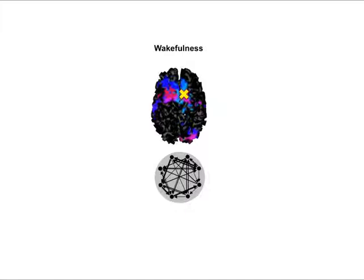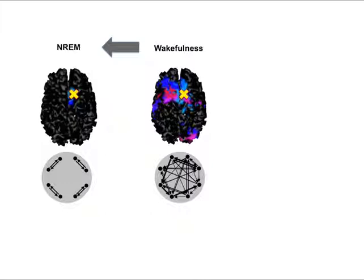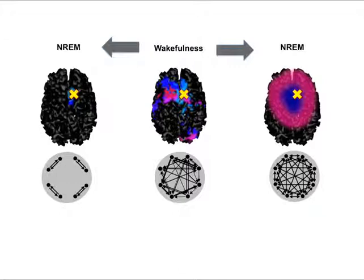To summarize the results: in wakefulness, we obtain responses that are both widespread and differentiated — specific and interesting. In sleep, we stimulate at the same intensity and have a response that is local, fitting with a breakdown of connectivity and integration. If we try to overcome this breakdown by hitting the brain harder, the best result is a big wave that spreads in a homogeneous fashion. These empirical results are in line with theoretical predictions.